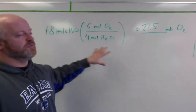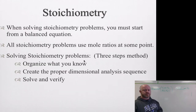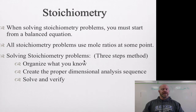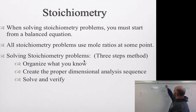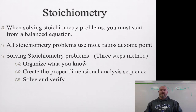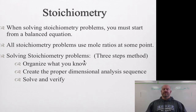This process of mole ratios is actually just one small step in a bigger process called stoichiometry. When solving stoichiometry problems, you have to start from a balanced chemical equation — that's a must, because we need to know these mole ratios. So the first step in all stoichiometry is to balance the equation. Once you have a balanced equation, you will use a mole ratio at some point — it's usually the very middle step. There are basically three things to work through: first, organize what you know, and find your starting point.